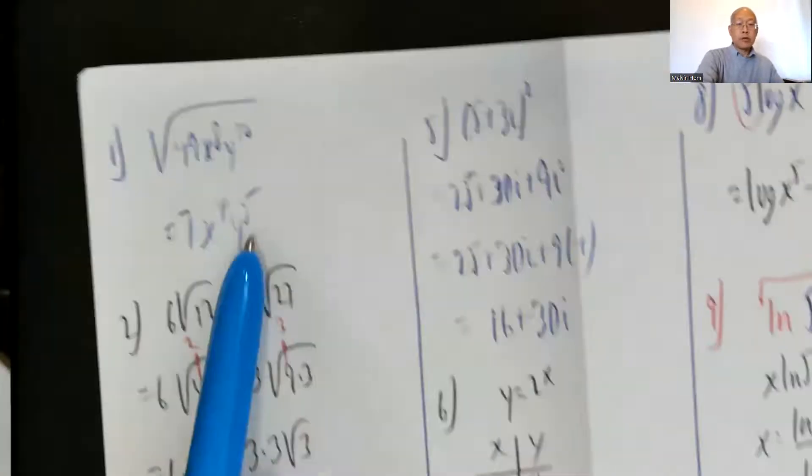This is solutions to exam 5 for Math 12820. Question number 1: